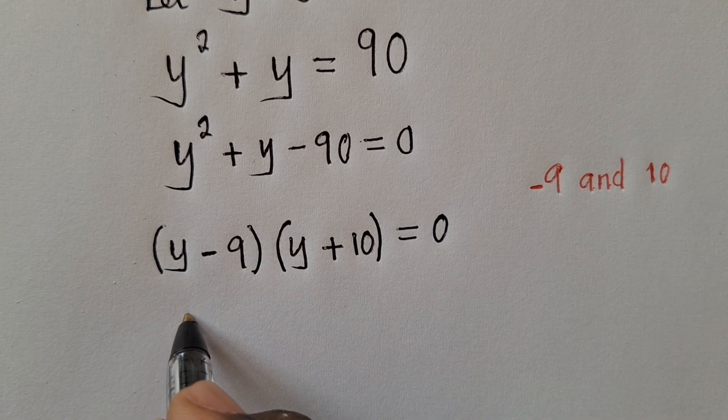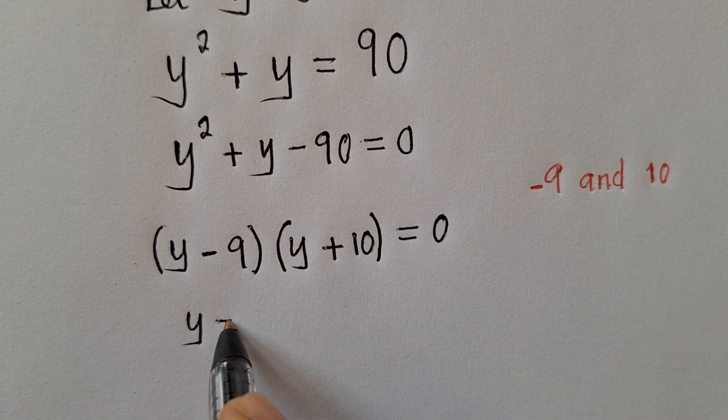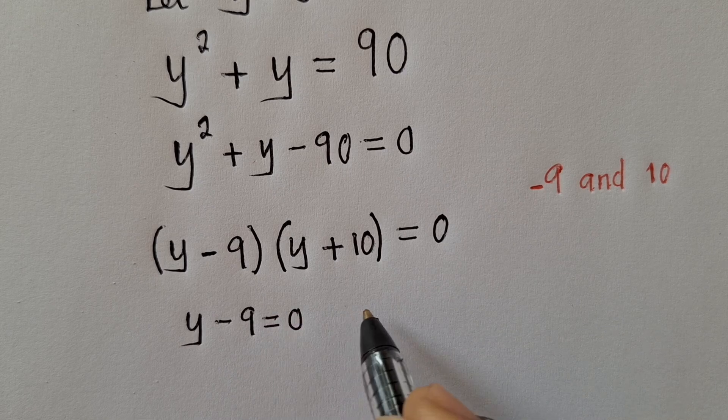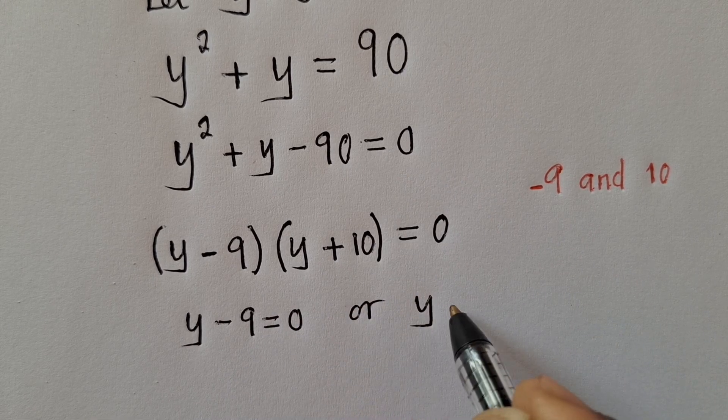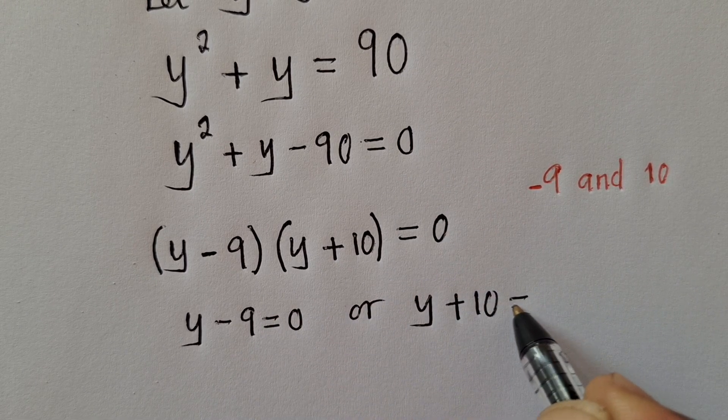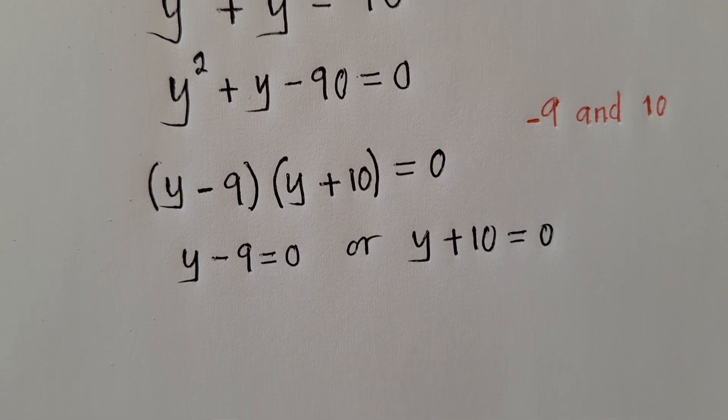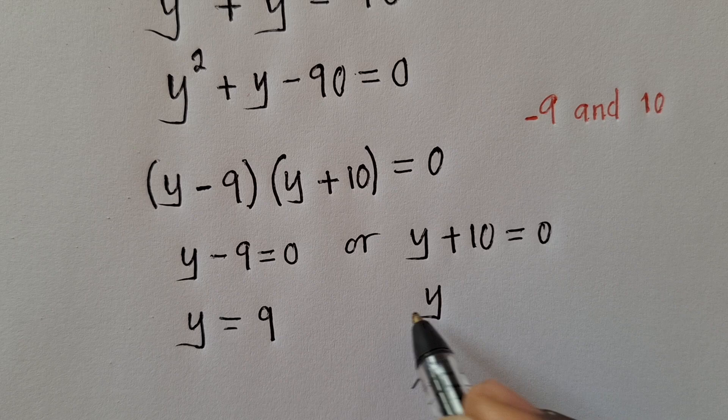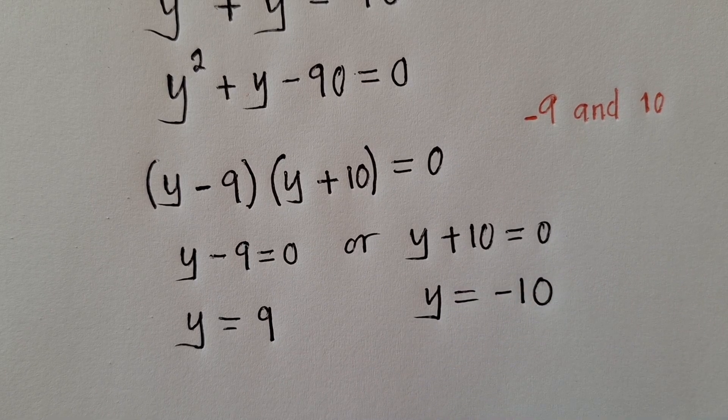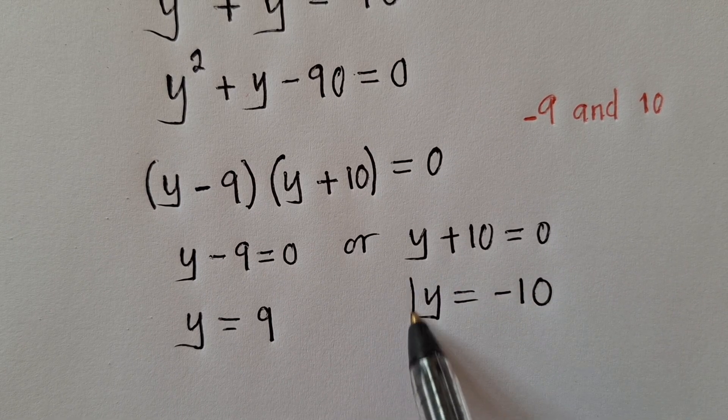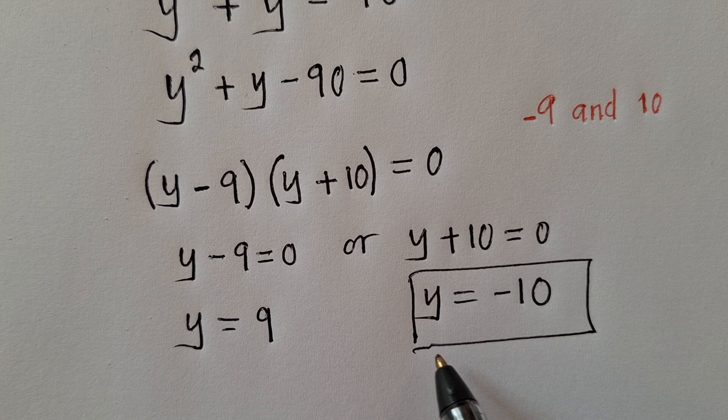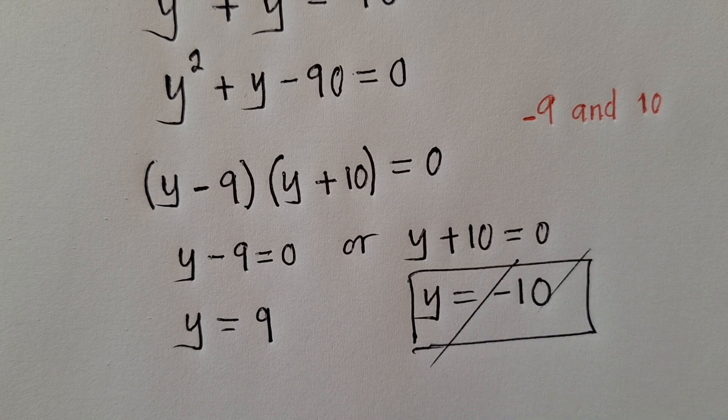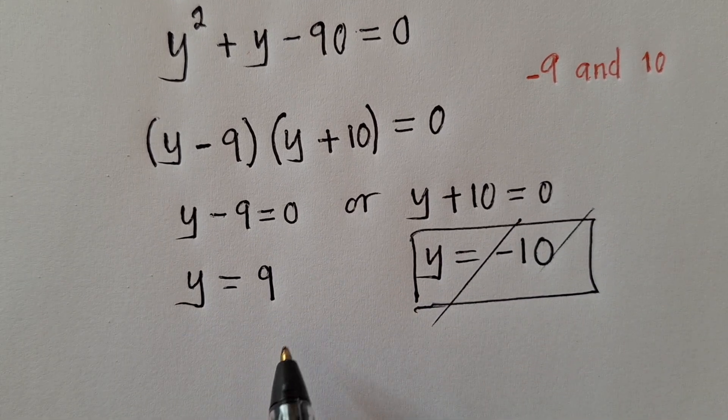And here we can say y minus 9 is equal to 0, or y plus 10 is also equal to 0. So from this point we solve for y. We're getting 9 here. For this one, we're getting negative 10. So this one won't give us a real solution, so we'll leave it. We'll just get this 9.